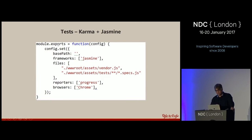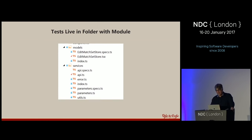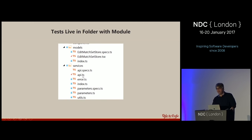Keep tools local, not global. My typical Karma configuration is minimal: set the base path, frameworks, files, reporters, and browsers. No plugins for transpilation — all that's handled by Webpack. Karma just loads the vendor file and the spec files that Webpack has already bundled, and executes those tests in a browser. I keep spec files in the same folder as the component or service they test — so API.ts and API.specs.ts are co-located.